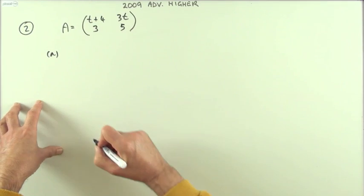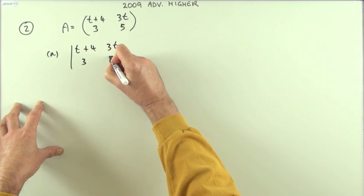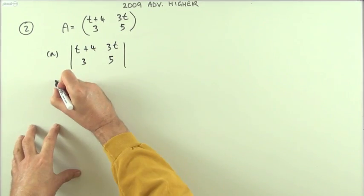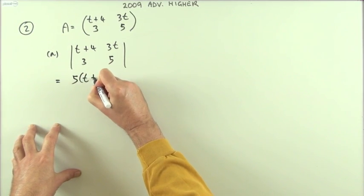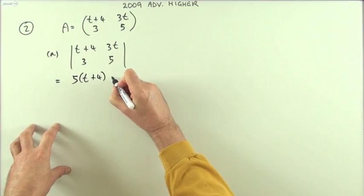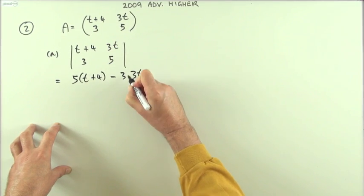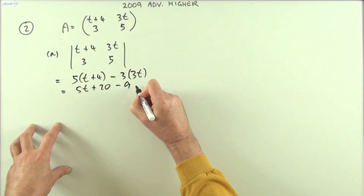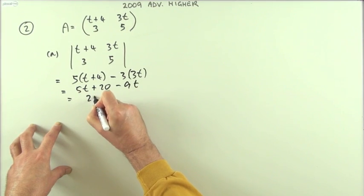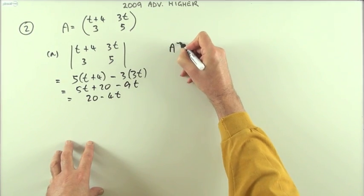The first thing I'll need is the determinant of A. So the determinant of A would begin by the main diagonal product: five times t plus four, minus the other diagonal product: three times three t. So I've got 5t plus 20 minus 9t, which is 20 minus 4t.